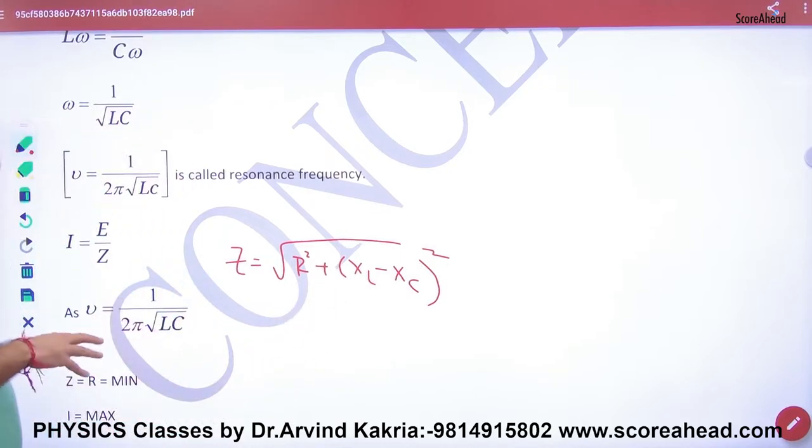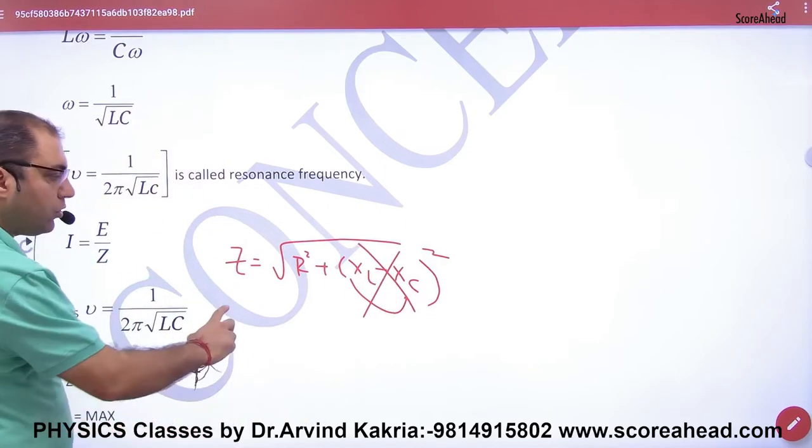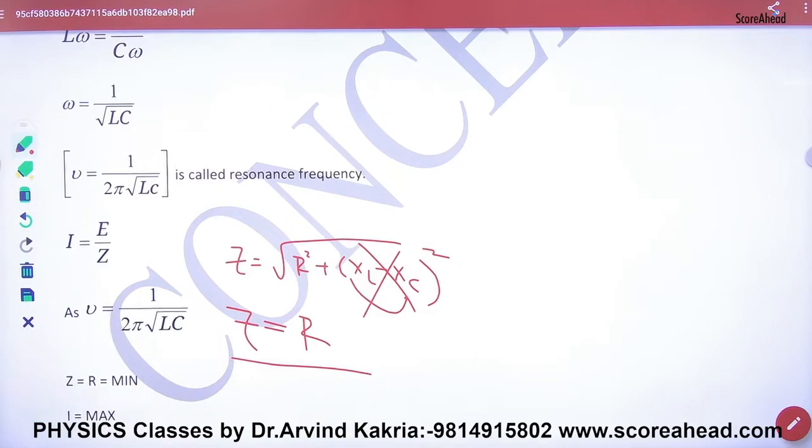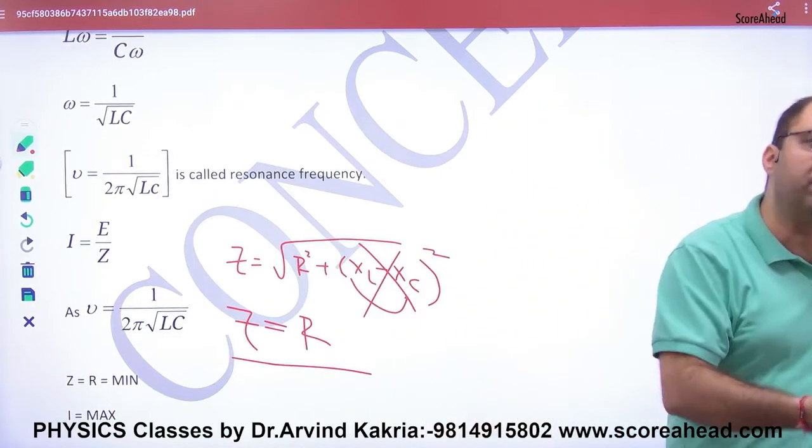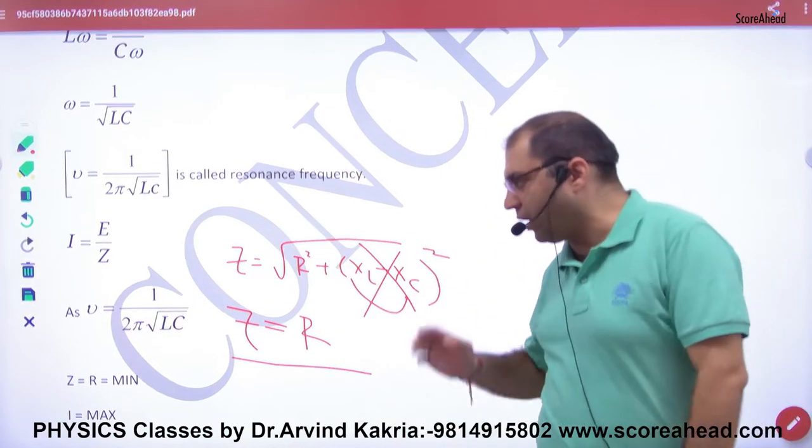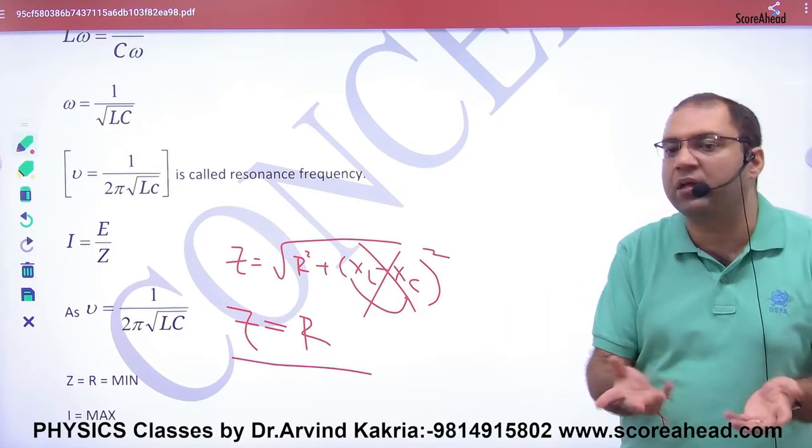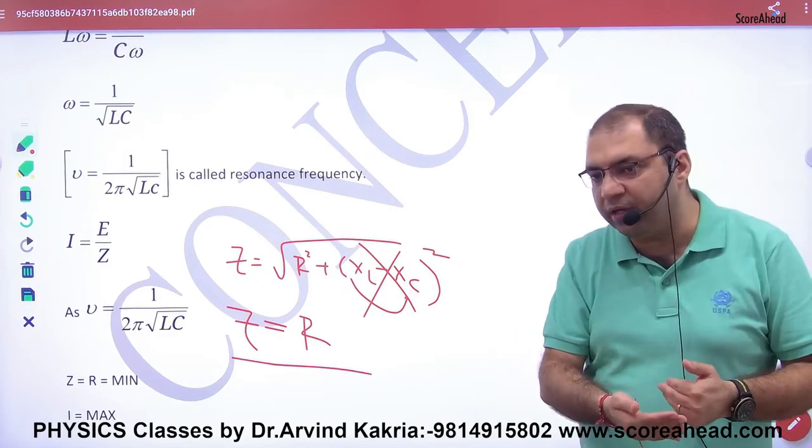If resonance occurs, then XL equals XC, so they cancel. Therefore Z equals only R. On resonance, when XL and XC cancel, the impedance becomes minimum because only R remains.